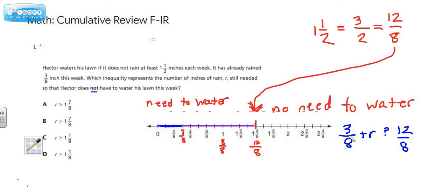Alright, so if we were actually going to solve this, the opposite of add three-eighths to a variable would be to subtract three-eighths. We would subtract three-eighths from both sides. This would cancel out. We'd have the r, and again we're trying to figure out which one of these symbols we want, but if we subtract twelve-eighths minus three-eighths, that gives us nine-eighths.